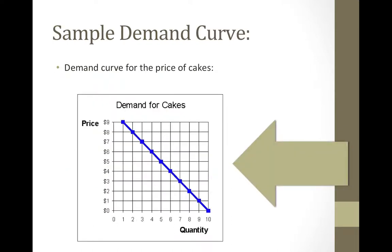Here's a sample demand curve for the price of cakes. At $9, there will be demand for one cake because of this high price. At a more reasonable price of $5, five cakes will be demanded. And at $2, eight cakes will be demanded. And at zero dollars, ten cakes will be demanded because everyone's going to want a cake if it's free. So the quantity of cakes demanded increases as the price drops.